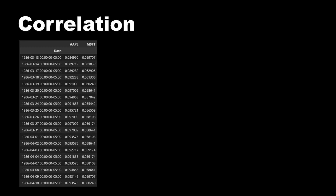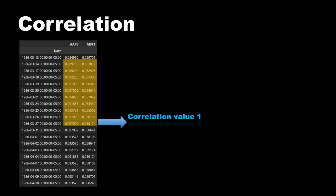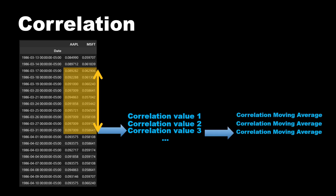To compute correlation we need a series of values between two assets. We will consider the closing prices of Apple and Microsoft stocks as an example. We consider a slice of candles to compute the Pearson correlation factor, and the value is saved as the most recent correlation for the last candle in the sliced window. Then we take a step forward in the data and compute another correlation factor, keeping sliding the candles window to compute all the correlations. The values will depend on the length of the considered window, and we can also extract the moving average of the correlation values as a smooth reference value.